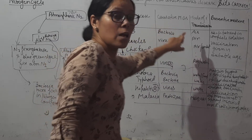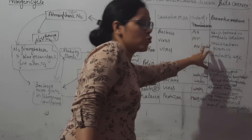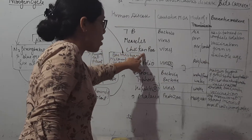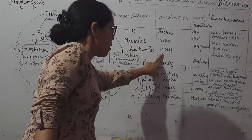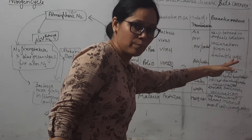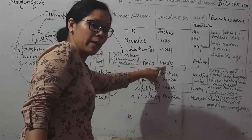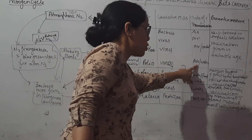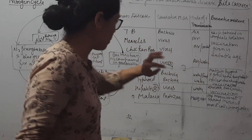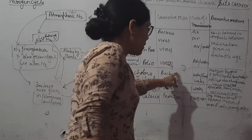Chickenpox is caused by a virus and spreads through air and contact. Prevention is complete isolation and vaccination. Polio is caused by a virus and the mode of transmission is air and water. Prevention is vaccination and complete isolation.